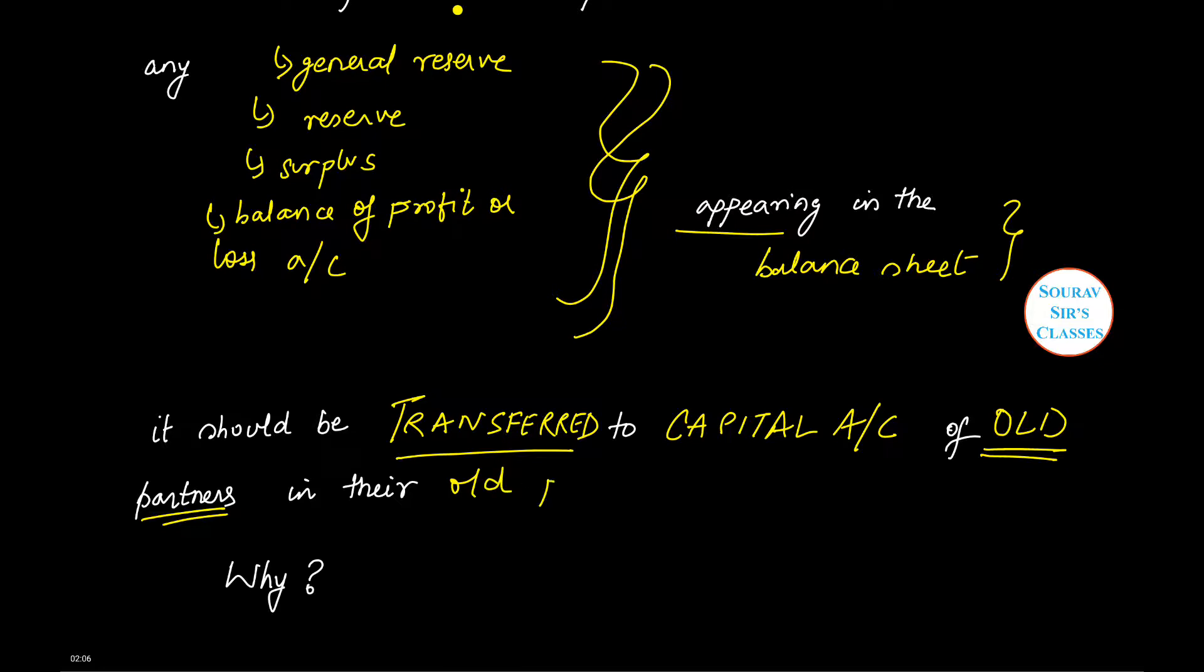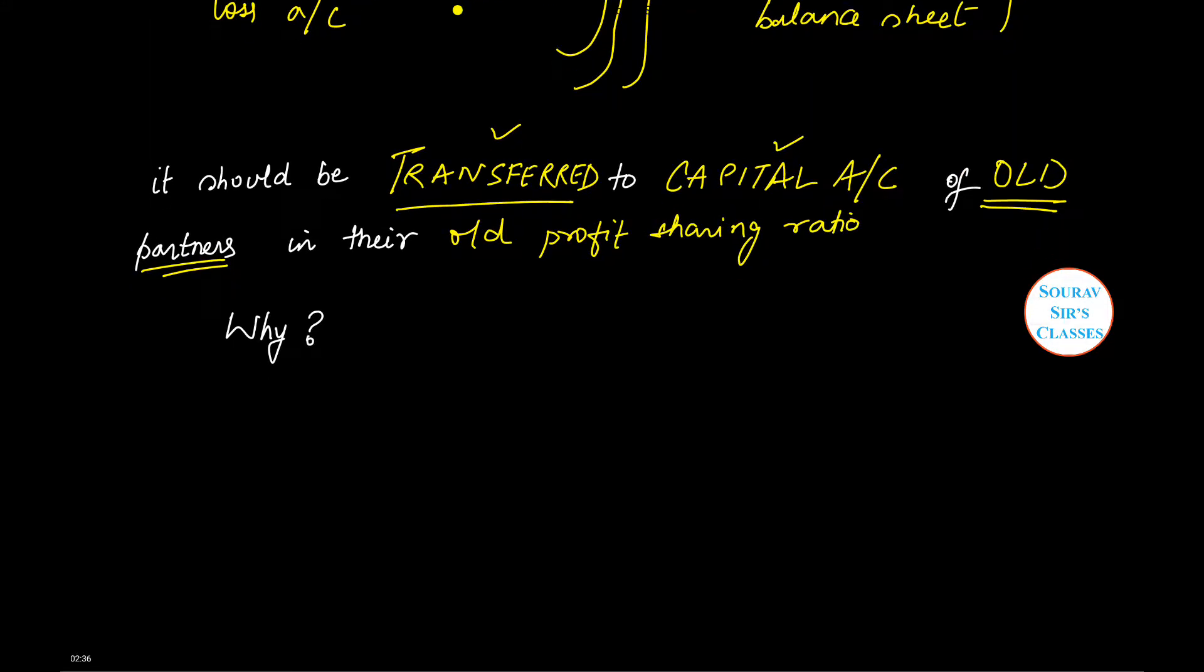It will be transferred in their old profit sharing ratio. So if the old profit sharing ratio is 1:2:2, then this will be the ratio in which any of these will be transferred to their capital account.